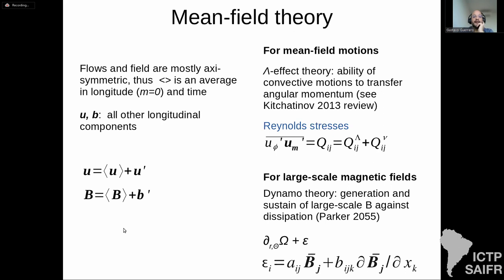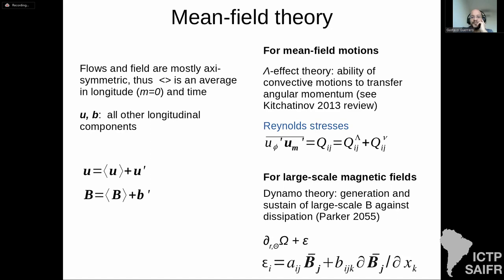For the Sun, since what we observe is axisymmetric, the average can be taken as a longitudinal average. When we apply this to the equations of motion we obtain Reynolds stresses, which can be parameterized in two terms: a dissipative term analogous to turbulent viscosity, and a non-dissipative term called the Lambda effect. The Lambda effect is the ability of turbulent convective motions to transfer angular momentum — this generates the large-scale motions.